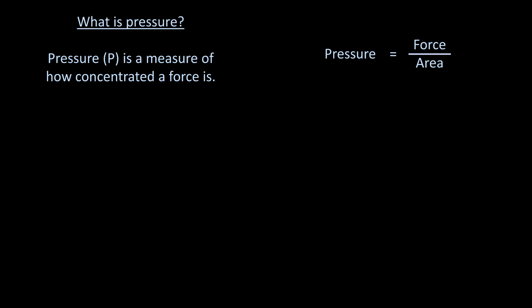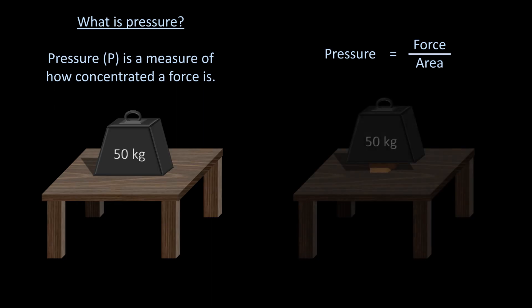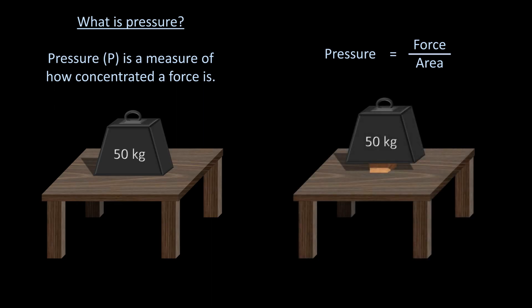Let's look at two situations. In the first, a 50 kg weight is resting on a table. In the second, a 50 kg weight is resting on a small wooden block of negligible mass which is then resting on a table. The force on the table caused by the object's weight is 50 kg times 9.8 m per second squared, or 490 N. This will be the same in both situations.